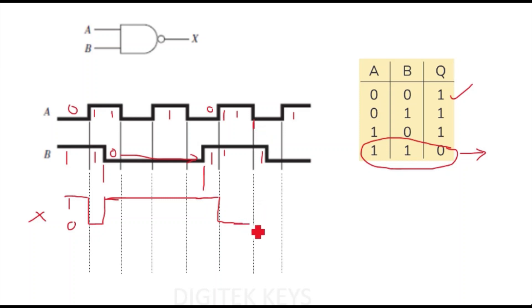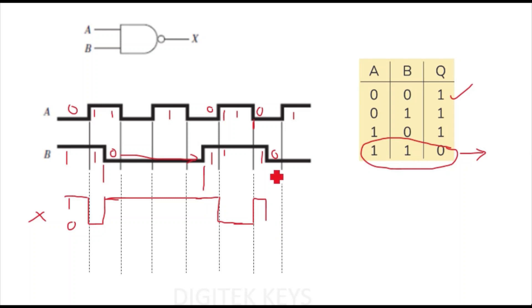After that, A becomes 1 again. Although B is 1, A has become 0 here, so output becomes 1 again. Then B becomes 0, so output remains 1. Now B is 0 and A is also 0 — 0,0 gives output 1, so this remains 1. Since B is 0 for the whole remaining duration, the output stays 1. That completes the two-input NAND gate output waveform.